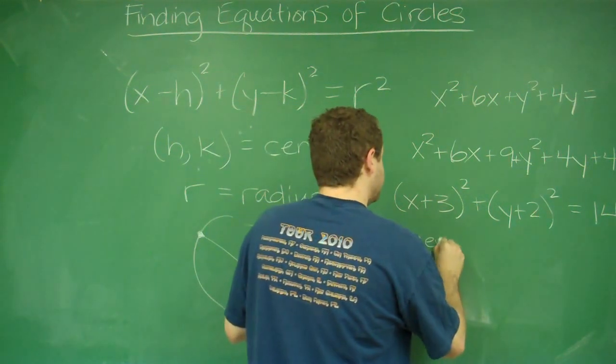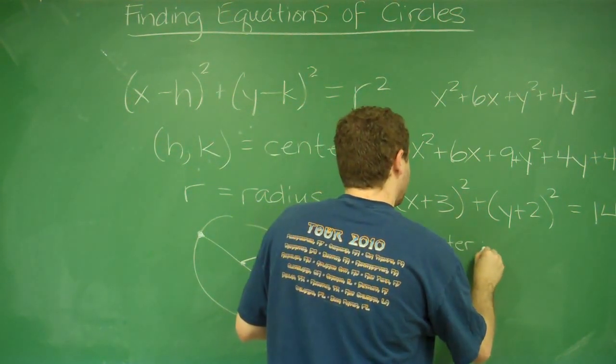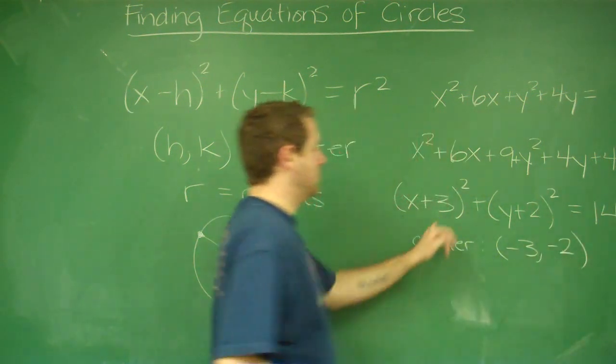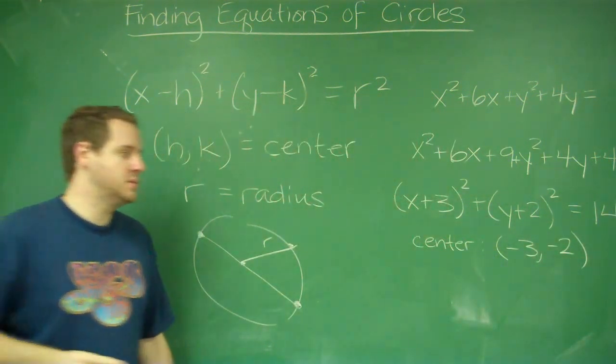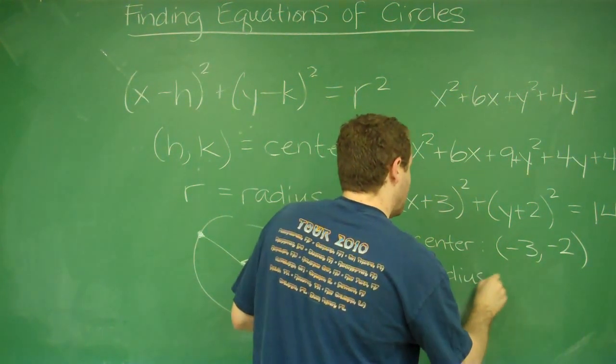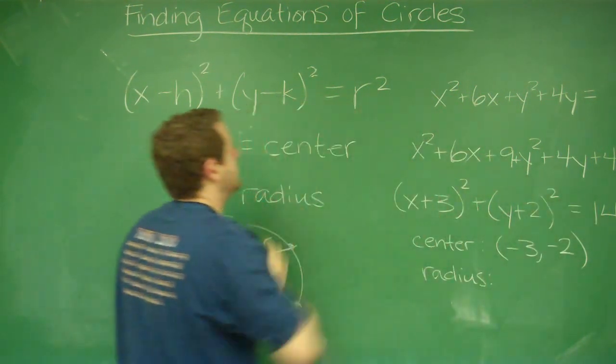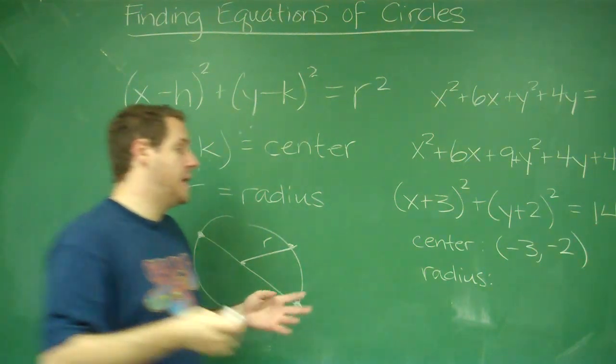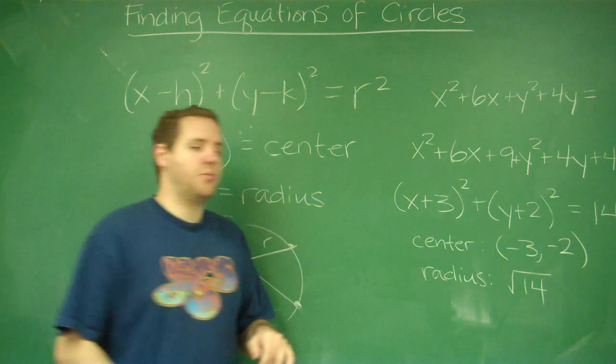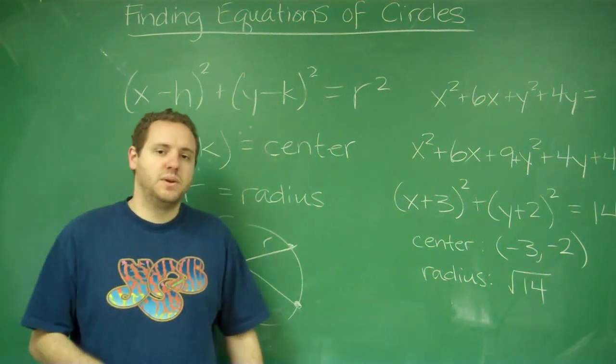What's the center? The center here would be negative 3, negative 2, because we had pluses in both of those. Our radius? Well, we know that 14 is the radius squared, so the radius must be the square root of 14, and you found the center and the radius that way.